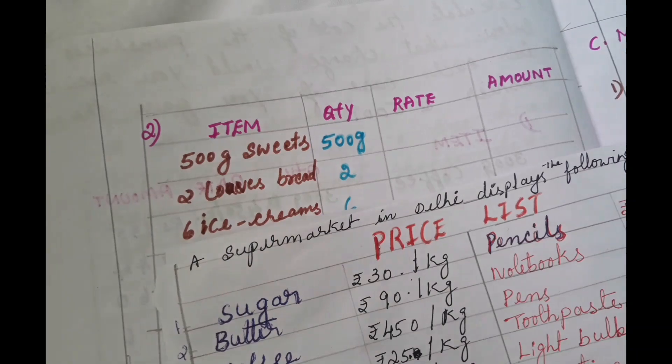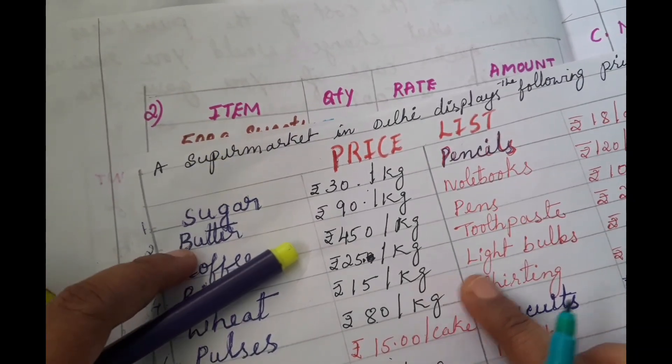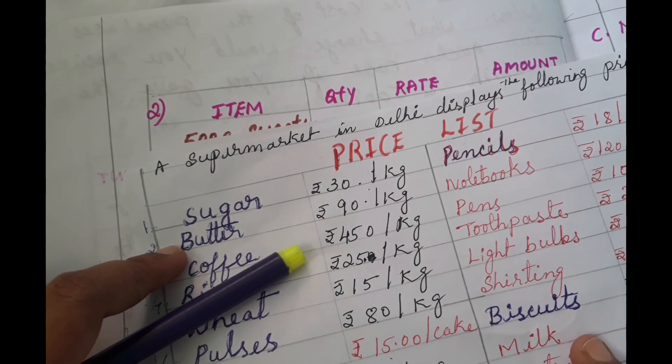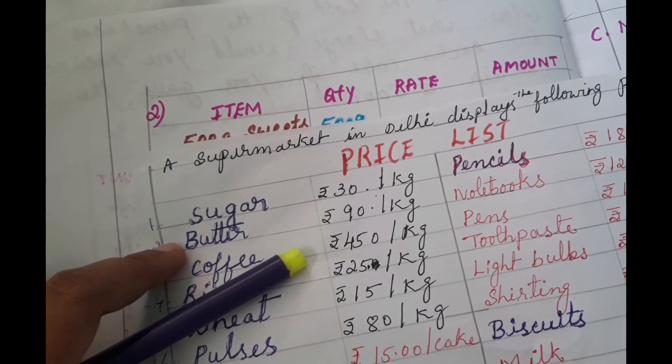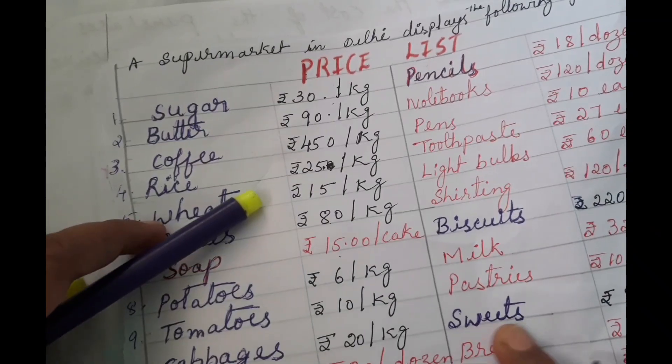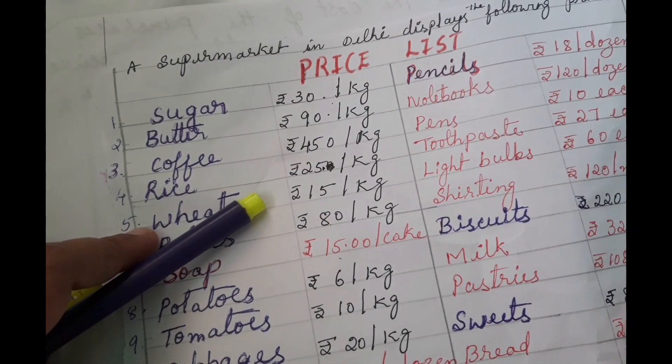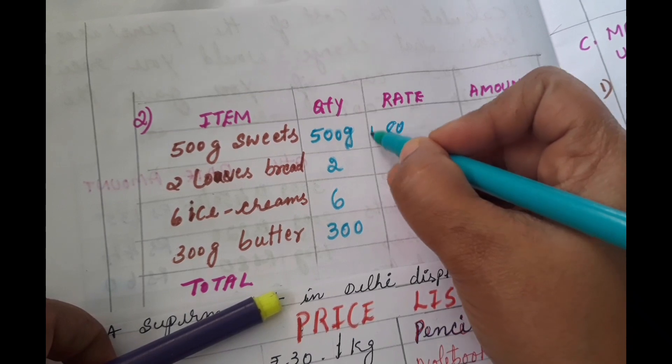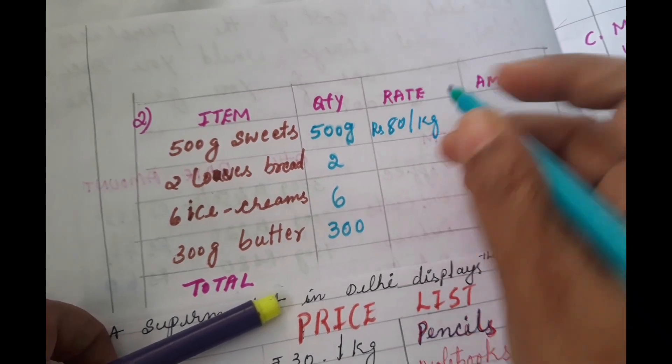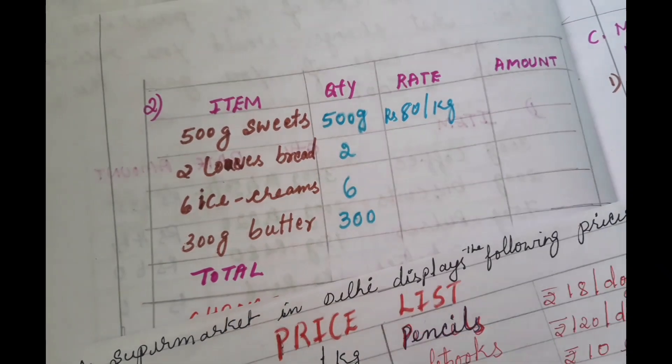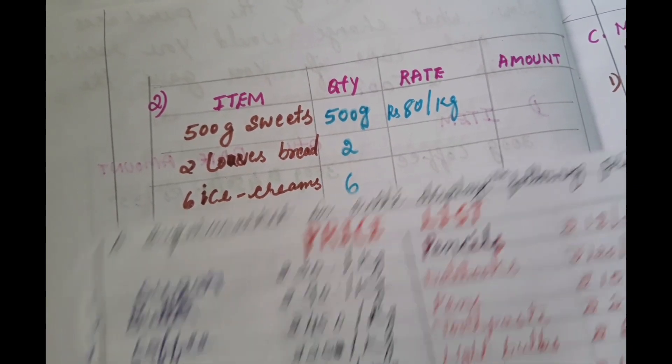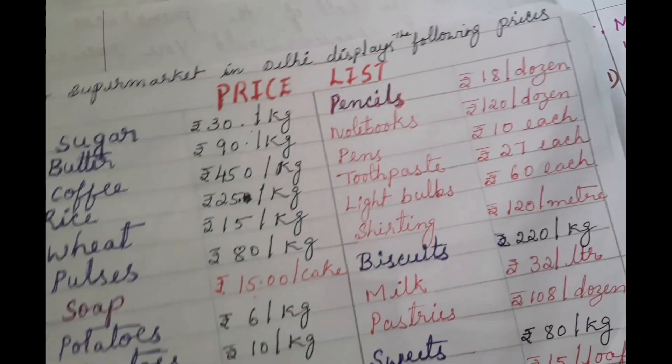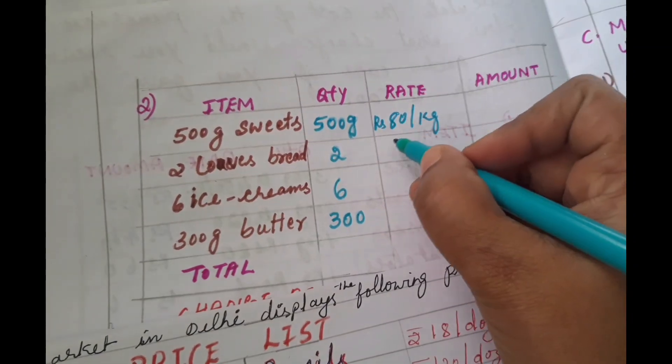So here 500 grams of sweets. For 1 kg, sweets is 80 rupees per kg. Then loose bread, 15 rupees per loaf. So rupees 15.